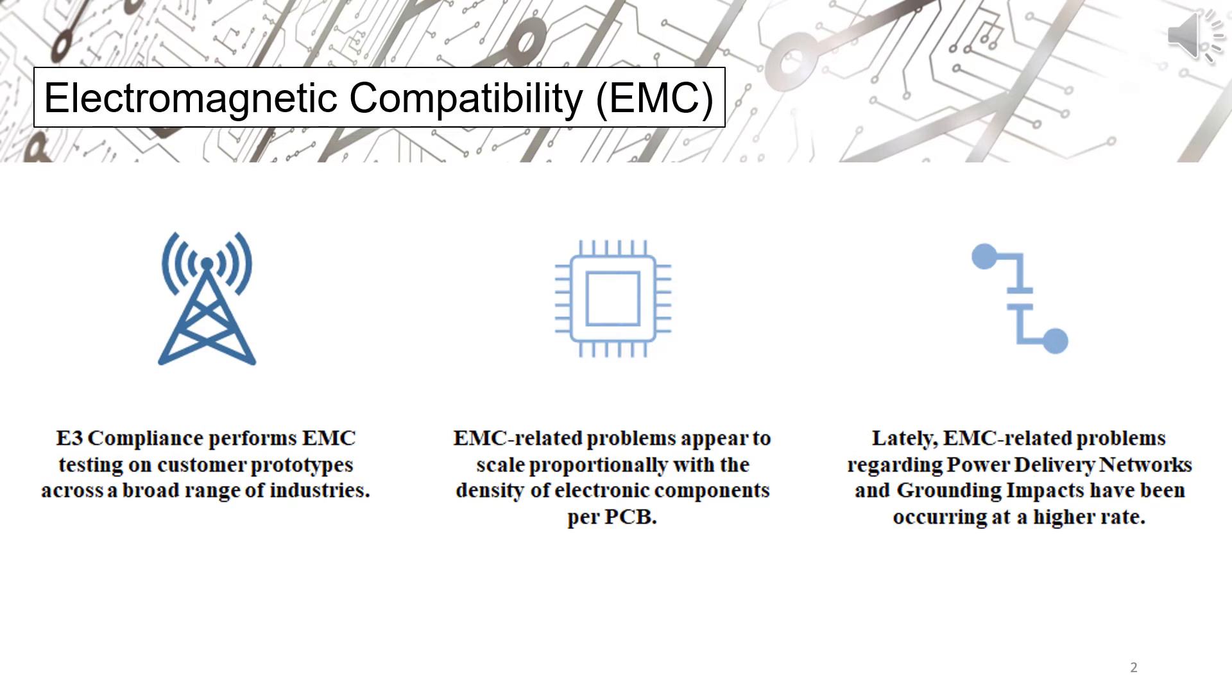Well, EMC describes the ability of electronic devices to function properly around nearby electronics without interfering with them. Picking up static from a radio station you aren't tuned into is a simple example of Electromagnetic Interference, or EMI.